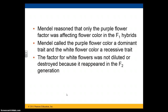He also noticed that the factor for white flowers was not diluted, not destroyed, and didn't get blended to make a light purple flower — because it would always reappear in the F2 generation. So the white flower color trait would skip a generation: it was present in the parent generation, absent in the F1 generation, but then reappeared in the F2 generation.